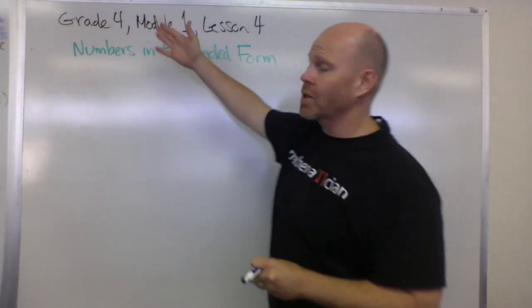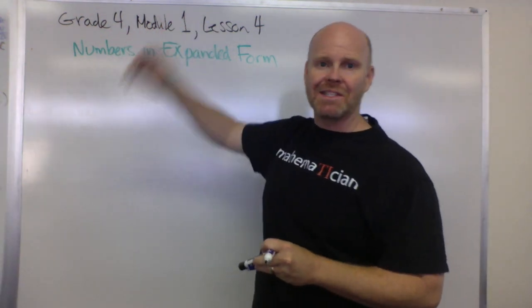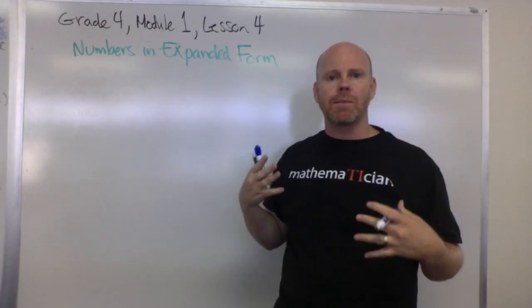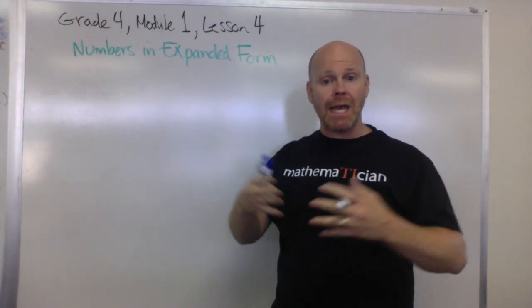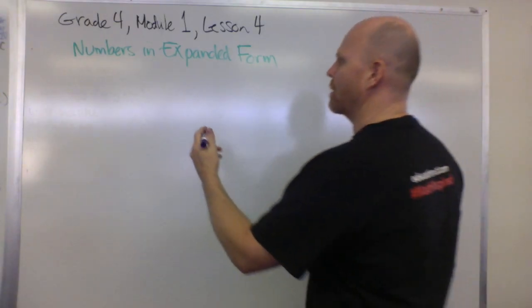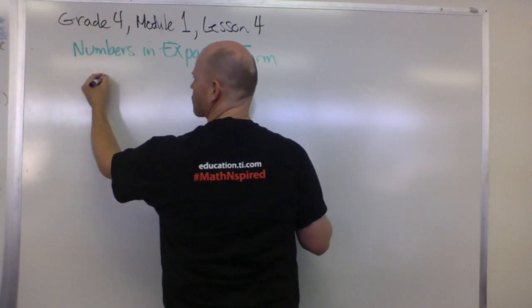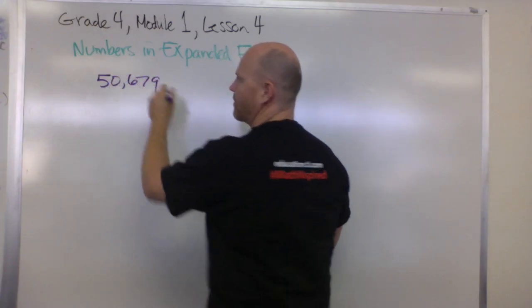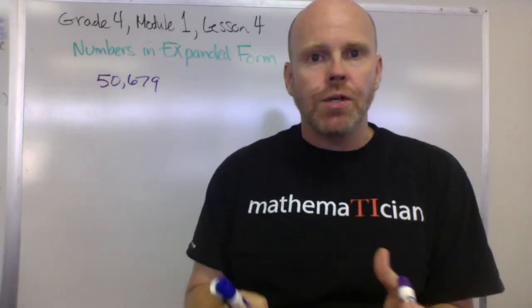This is Grade 4, Module 1, Lesson 5 from Engage New York. In this lesson, we are going to be talking about numbers in expanded form and what that means. So let's say we've got just the classic traditional number of 50,679. That's our traditional number.